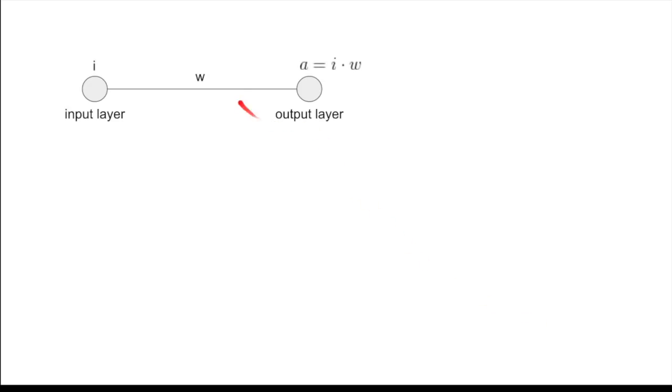The input i, the weight w, and the output activation a are all scalar values. There is no bias unit, and there is no non-linearity involved. The activation is simply the net input, or the input times the weight.